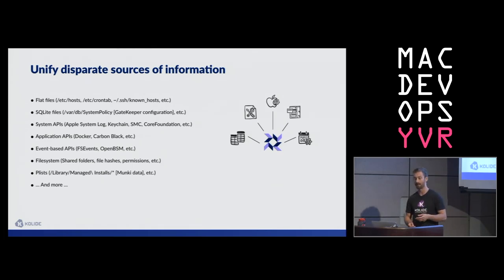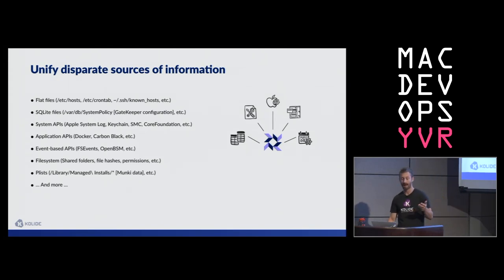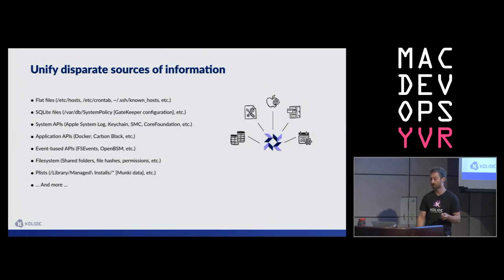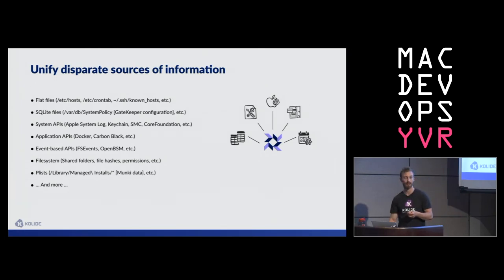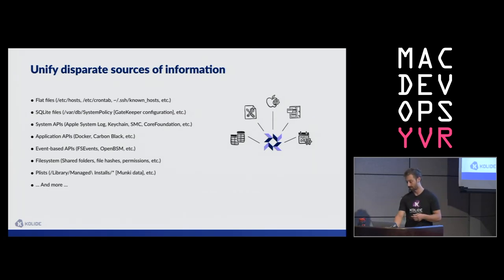There's application APIs from other agents and software you might be running, information on the file system like hashes of files, directory structures, permissions, shared folders, and data stored in plists which have to be parsed. OS Query can unify all of this stuff.